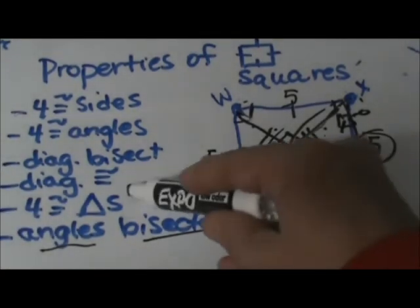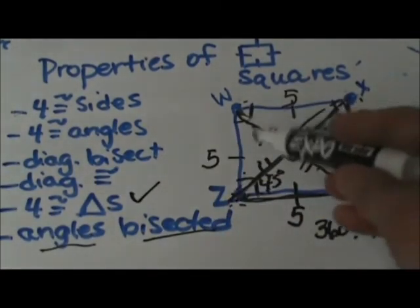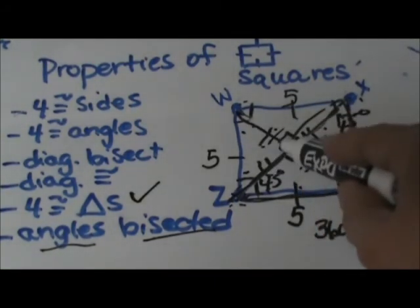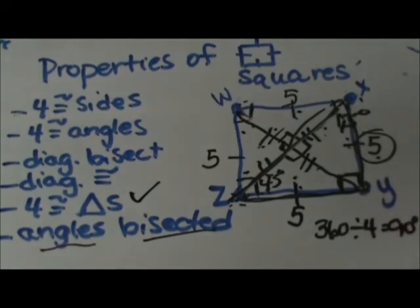So we actually have four congruent triangles inside of a square. They are all 45-45-90 right triangles, and they are all congruent to each other. So those are some properties of a square, and a square is the perfect quadrilateral.